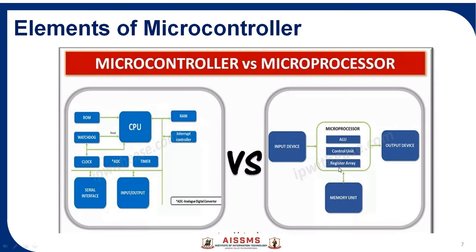The next point is elements of a microcontroller. In a microprocessor, there is only ALU, control unit, and register array. But in a microcontroller, ROM, watchdog timer, RAM, interrupt controller, timer, clock, ADC, input-output, and serial interface — everything is embedded into the single chip. This is the microcontroller.